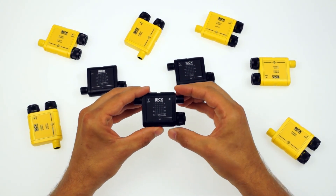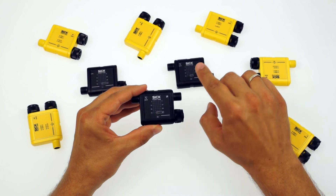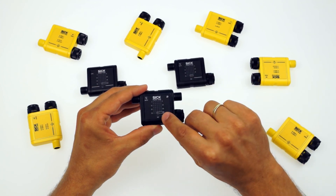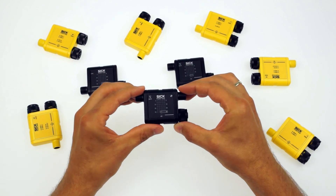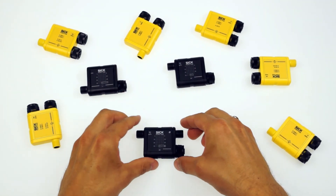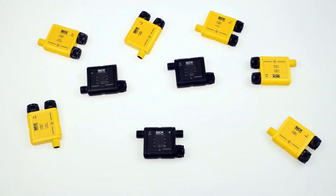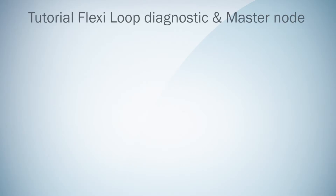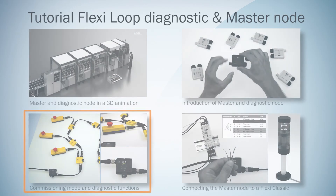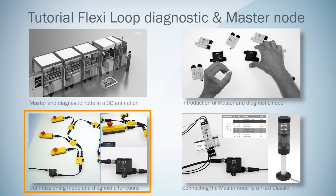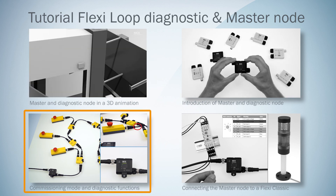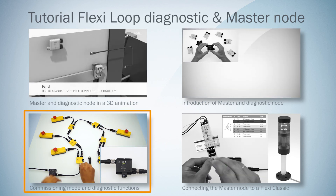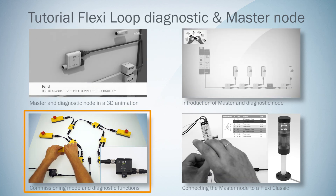So where there is no LED on master node 1, there is an LED on master node 2 for the visualization of the IO-Link status. That's been the introduction of the newest FlexiLoop nodes. In the next video of this tutorial series, we'll have a closer look at how the master and diagnostic nodes are useful tools during commissioning of safety functions.